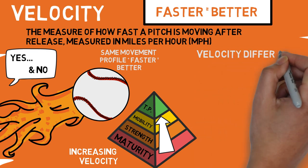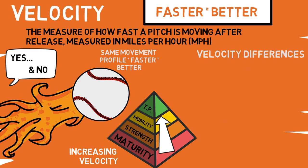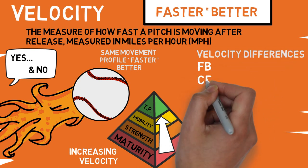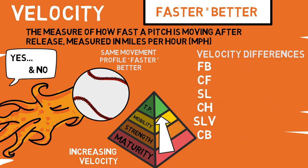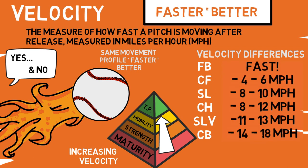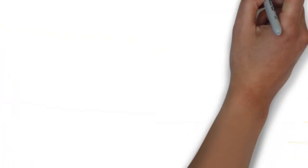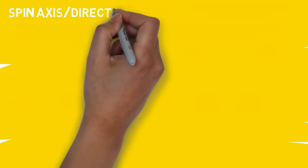But that isn't the only way velocity can be used. Here's a chart that shows you the ideal velocity differences by pitch type, shown by subtracting these numbers from your average fastball velocity. Now we can move on to spin axis, or direction and tilt.